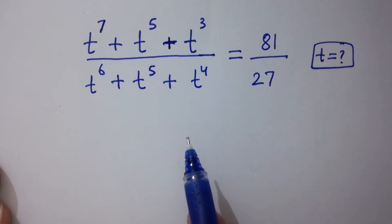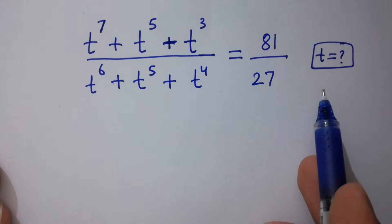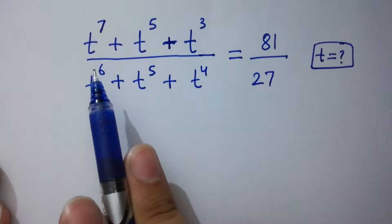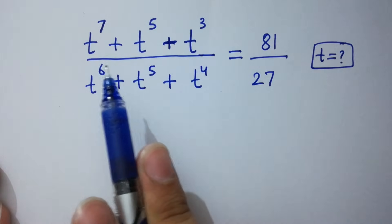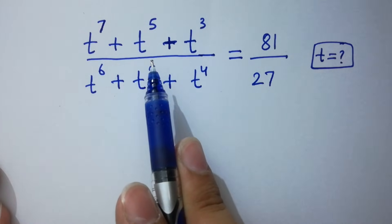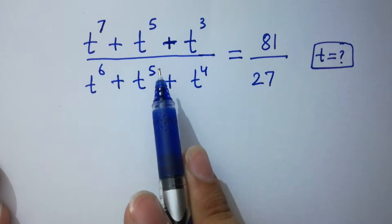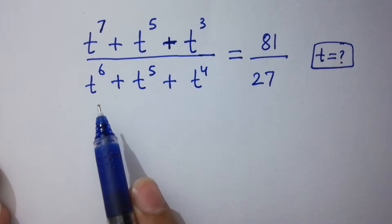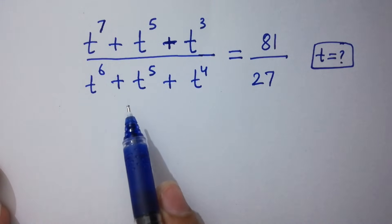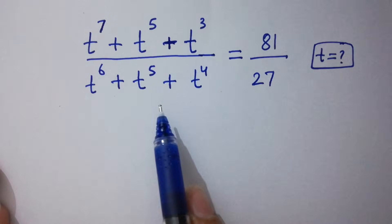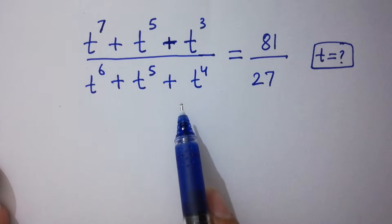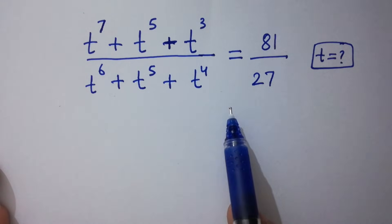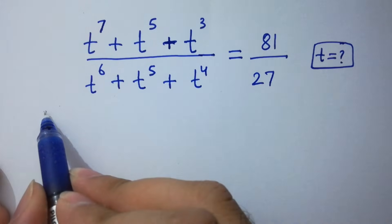Hello friends. Find the value of t if t to the power 7 plus t to the power 5 plus t cubed, over t to the power 6 plus t to the power 5 plus t to the power 4, equals 81 over 27. Let's have a solution.